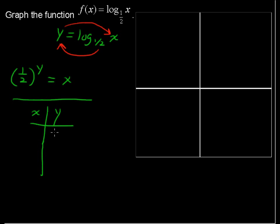If y is zero, one-half to the zero power equals one. Anything to the zero power equals one. So when x is one, y is zero. We'll put that right there. If y is one, one-half to the y power is one-half. So when x is one-half, y is one.